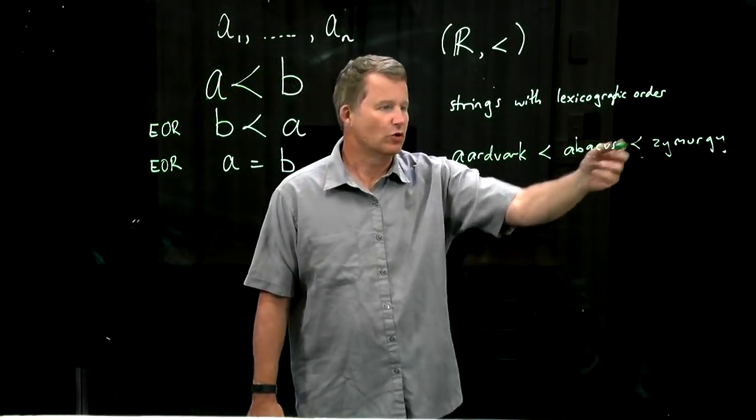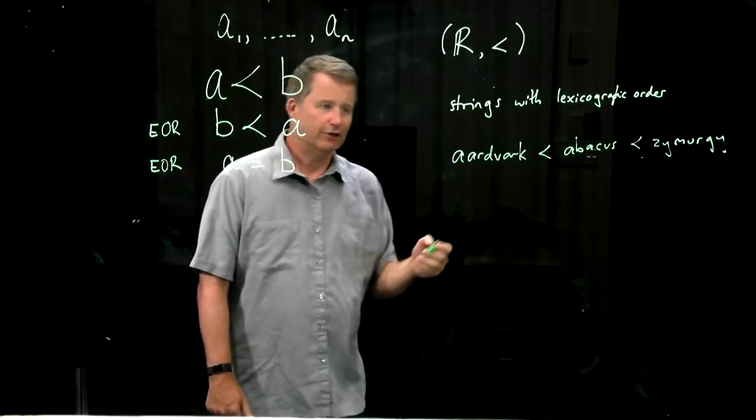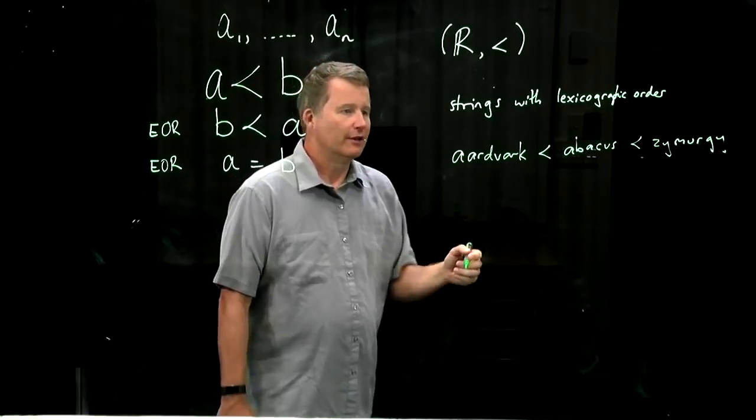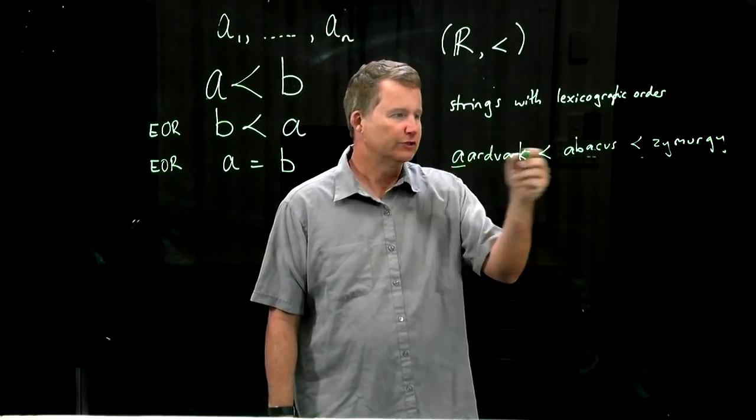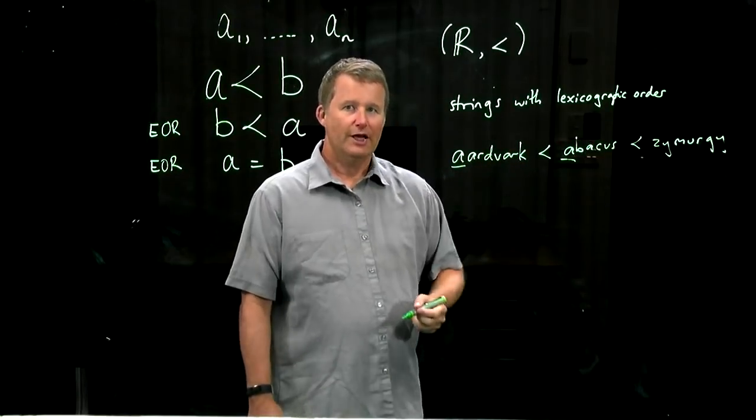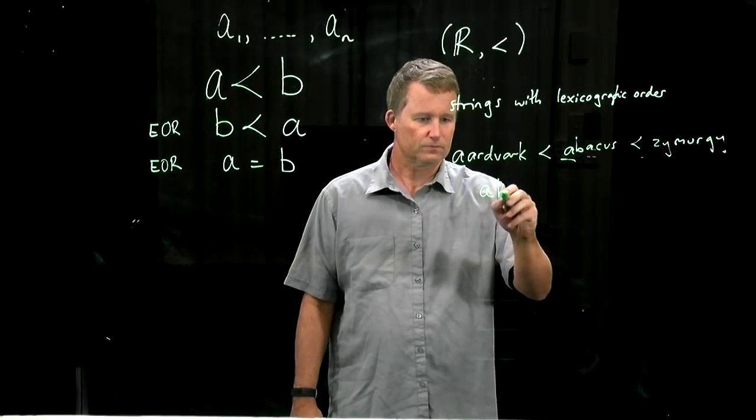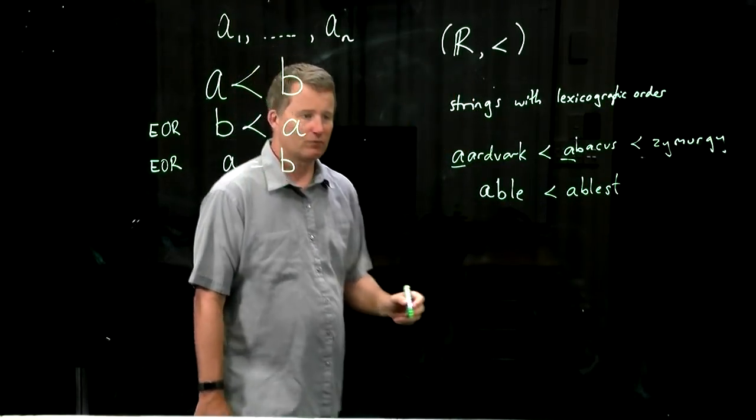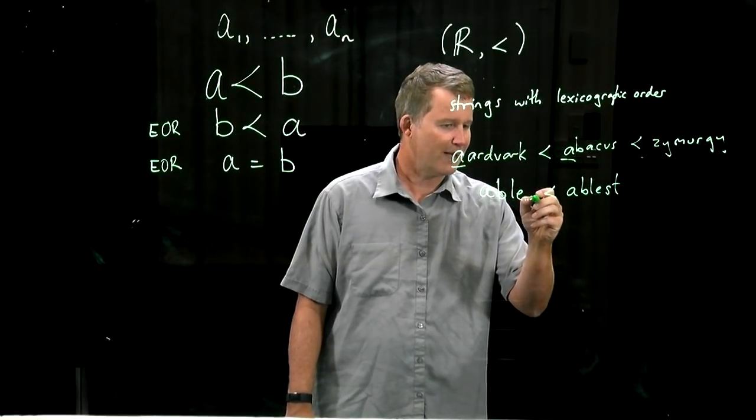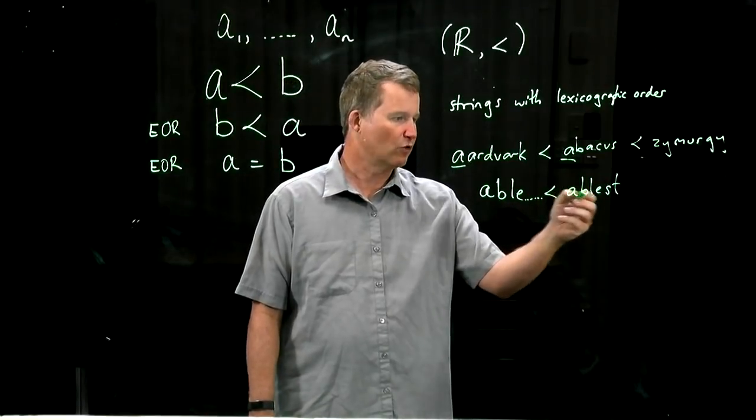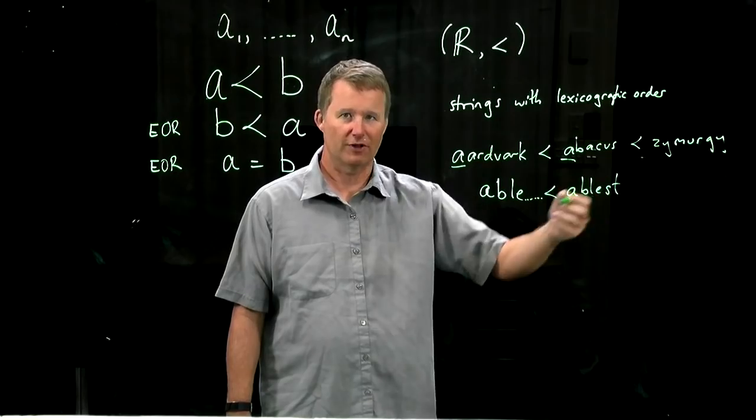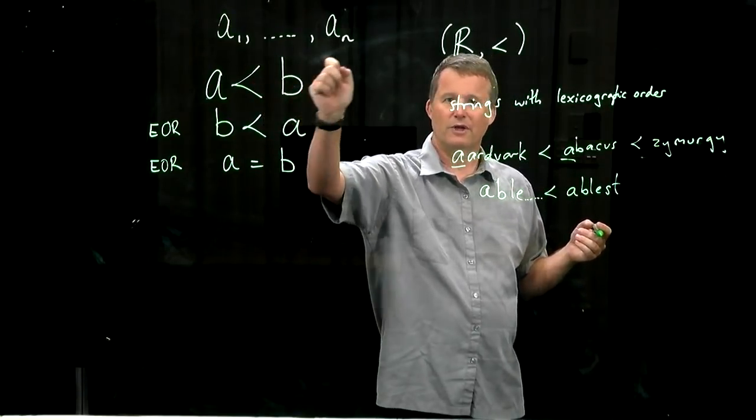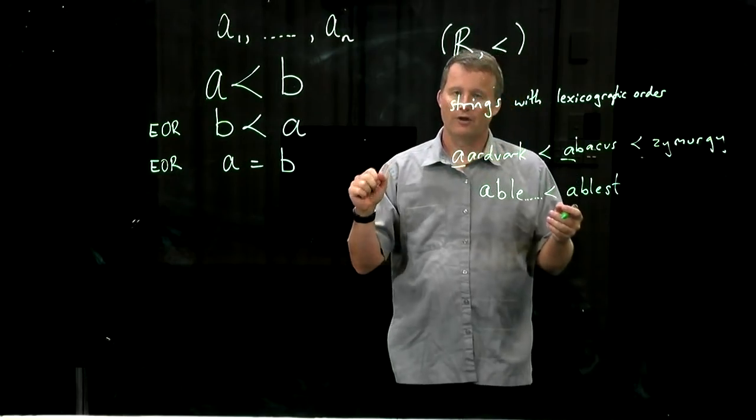The definition of this ordering is something we all know. You first look at the first letter and use the normal ordering on the alphabet. If you can't use that to decide, for example here, you go to the next one. If you ever run out of letters, we can think of the string as being padded with empty characters and each of those comes before any other letter. So short words come before extensions of them.